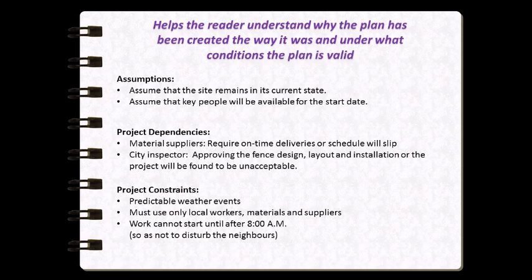The next three sections — assumptions, dependencies, and constraints — are very important. They explain to the reader the conditions under which the plan is valid, why the plan was developed the way it was, and why it may not be achievable. Assumptions are conditions you've assumed to be true without being able to validate them. For our fence project, we may have assumed that the backyard will remain in its current state until construction begins. If the homeowner dumps dirt in the backyard, our plan may no longer be valid. By defining these conditions, we have justification for changing the plan if an assumption proves incorrect.